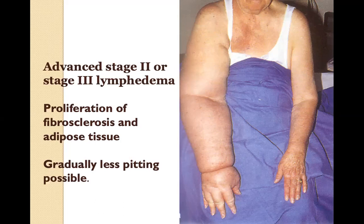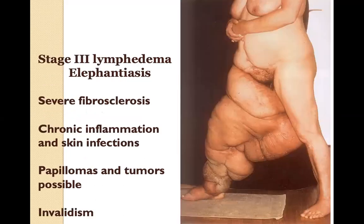Many patients will stay in a stage two of some sort, providing self-care and management. You can see proliferation, fibrosclerosis, and adipose tissue development. Deep skin creases at the knuckles and wrist are very classic for stage three lymphedema. Advanced stage three is called elephantiasis because it resembles an elephant limb, with severe fibrosclerosis and many secondary skin changes.